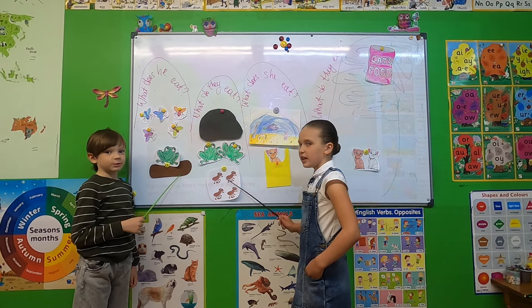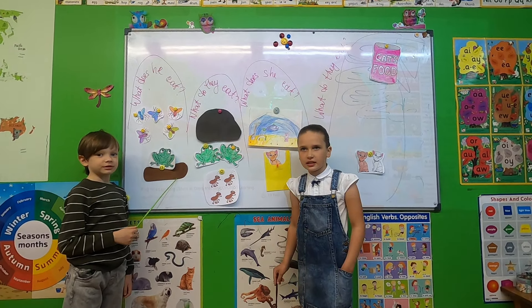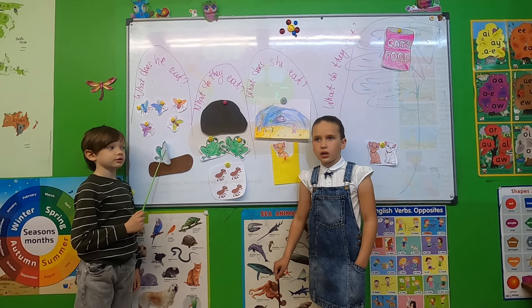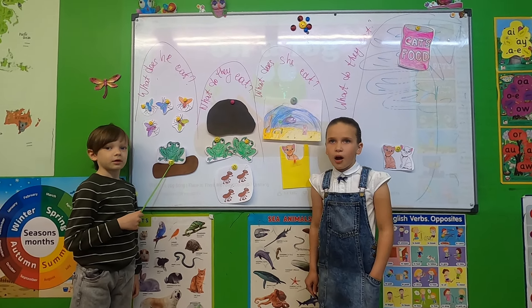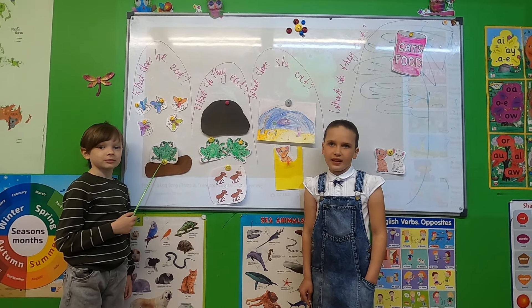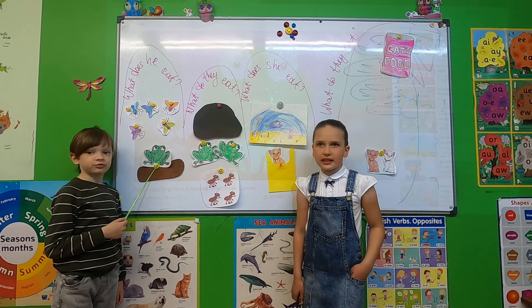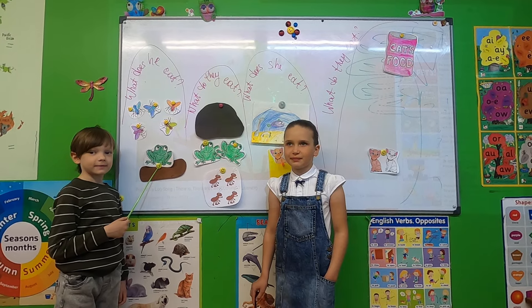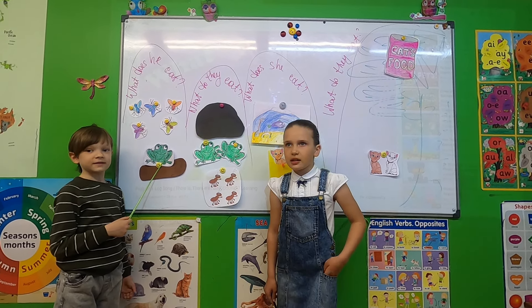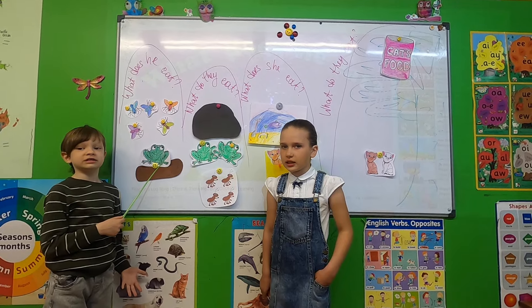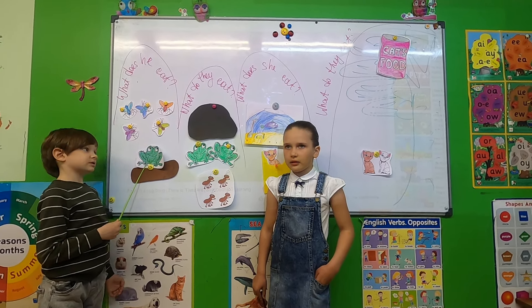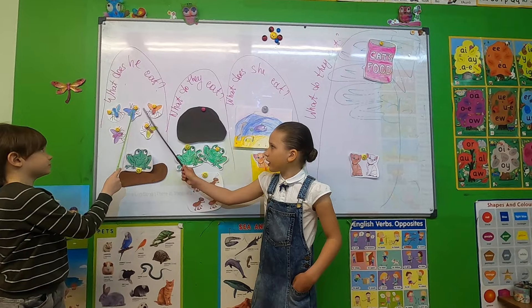There is a frog on a log. On a log. There is a frog on a log. What does he eat? He eats flies.